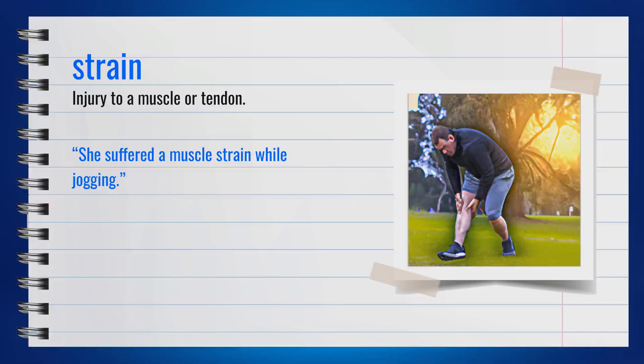The word strain, spelled S-T-R-A-I-N, is a noun. It means injury to a muscle or tendon. For example, she suffered a muscle strain while jogging. In summary, strain means an injury to the muscle or tendon.